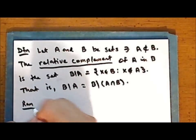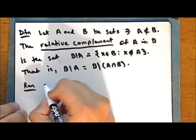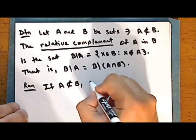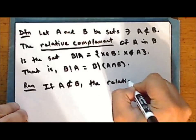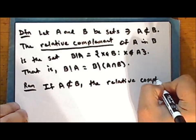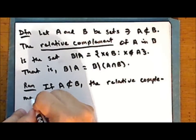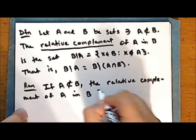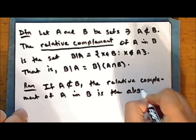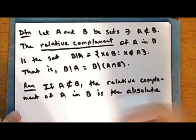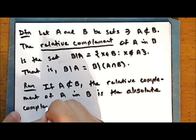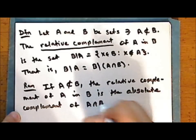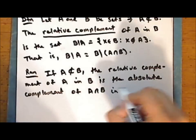Let me state that in words: if A is not contained in B, the relative complement of the set A in the set B is the absolute complement of the intersection of A and B in the set B.